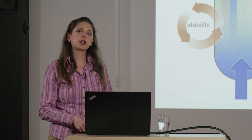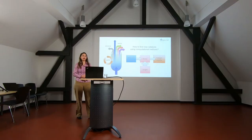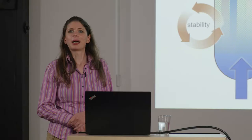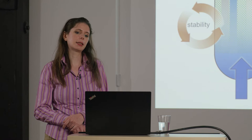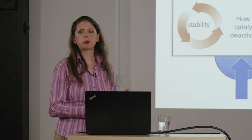What we actually need for reactions under harsh conditions is a model that is able to predict catalyst stability rather than catalytic activity. Predicting catalyst stability is highly challenging, which has two main reasons. The first reason is that catalyst degradation happens on very long time scales, and these time scales are usually not accessible directly by current computational methods, which means we need to develop new computational methods to model catalyst stability. The second reason is that there are many possible mechanisms by which catalysts can degrade under reaction conditions.